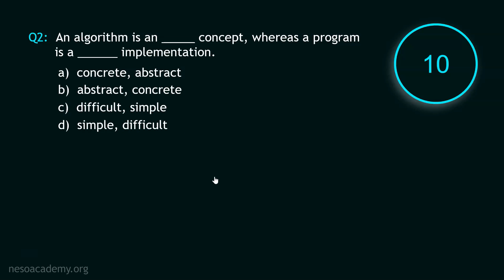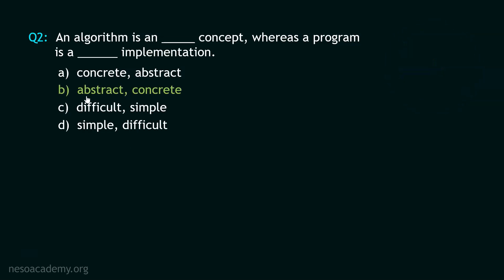And your time starts now. Stop! The correct option is option B. Abstract, concrete. An algorithm is an abstract concept whereas a program is a concrete implementation. Now let's move to question number 3.